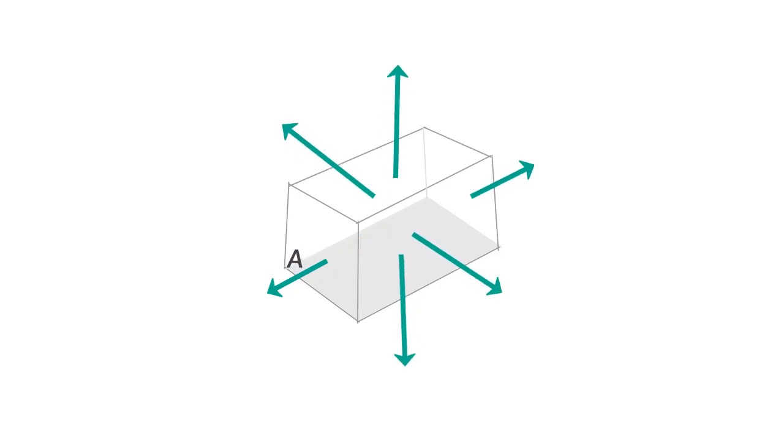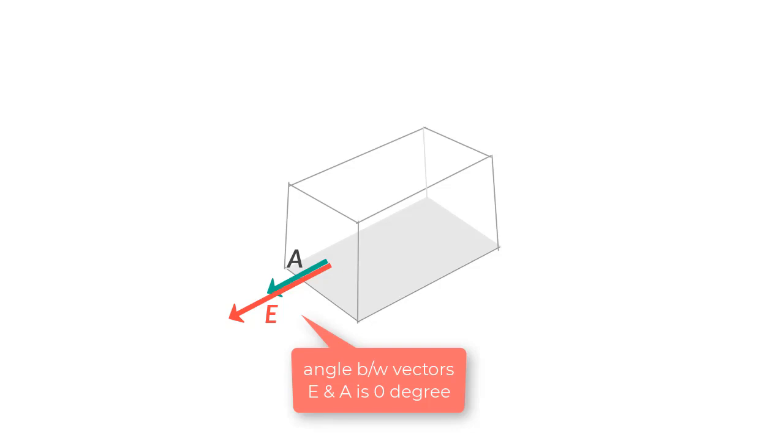With this convention, what you'll notice is that if you have the field vector pointing in outward direction, the angle between area vector and the field vector E will be zero and cos alpha will become one, so the flux will be positive.